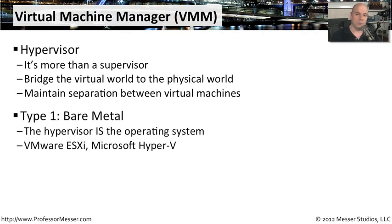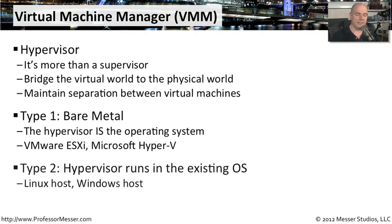There are a couple of types of virtual machine managers. Type 1 is referred to as a bare metal machine manager — that's when I would purchase a big server and simply load this virtual machine software right on that raw server. There's no underlying operating system involved. I simply load VMware's ESXi, which is a bare metal hypervisor, or I would load Microsoft Hyper-V. There's no additional operating system software I have to go through to make this happen. That's a little different than a Type 2.